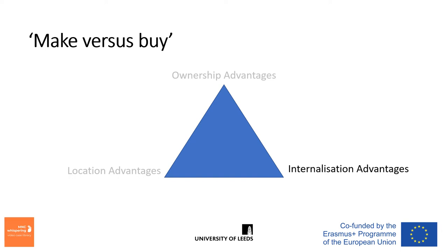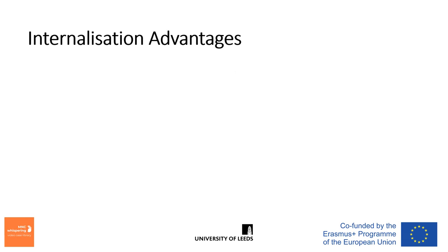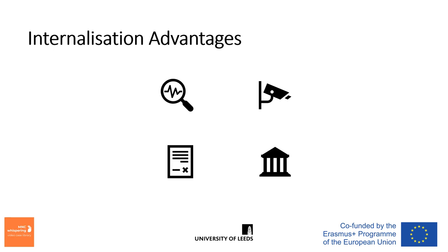How a firm internationalizes will depend on internalization advantages. Is it better for a firm to have sole ownership of an operation, or to manufacture in-house by establishing an entity via foreign direct investment? Or is it sufficient to have contractual arrangements with third parties via licensing or franchising? The final outcome may be determined by a need to maintain control over proprietary technology, to eliminate transaction costs such as identifying or negotiating with partners, or overseeing and monitoring contracts with third-party manufacturers — overall making it more cost-effective to internalize the market for production factors and other resources.